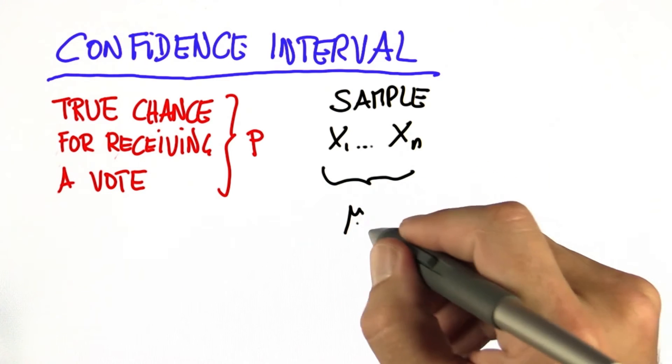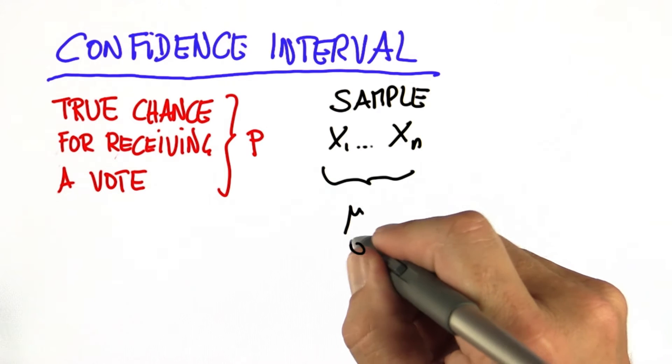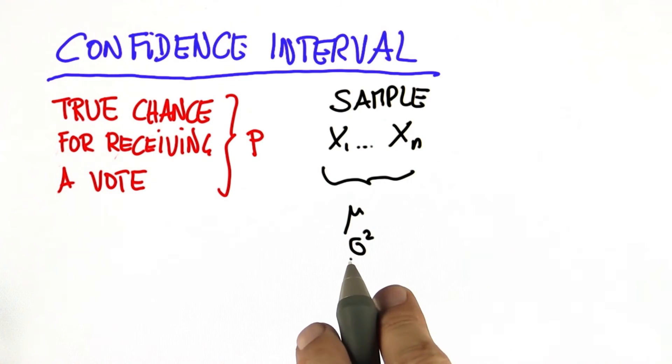As we know, this gives us an estimated mean. It gives us also a variance, and therefore a standard deviation.